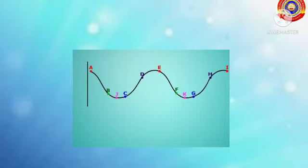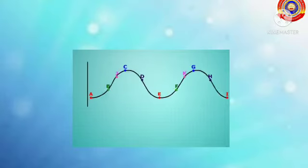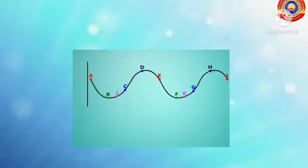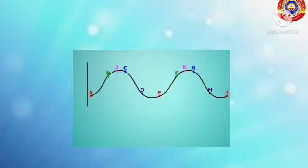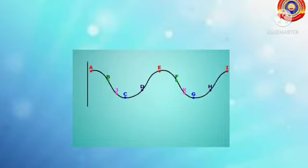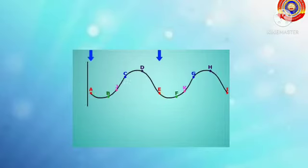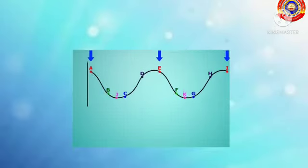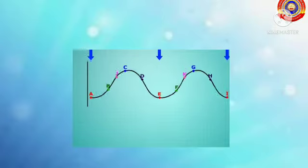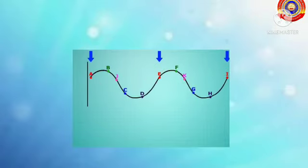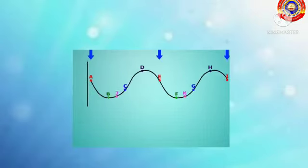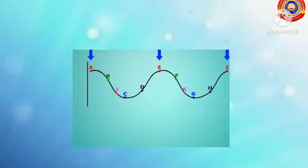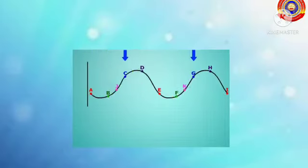When transverse waves are formed, all the particles begin to vibrate — all particles move up and down from their mean position. From this, we can see the particles which vibrate in a similar manner. For example, A, E, and I move up and down in the same way. Like this, we can see many particles which move similarly.